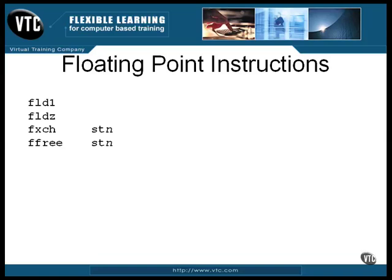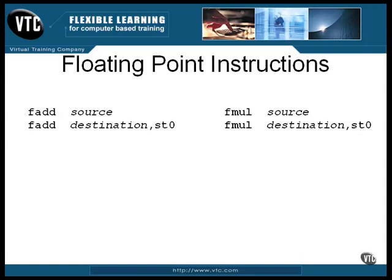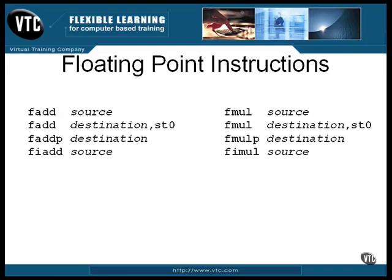The FFREE instruction marks the named register as being available by marking it as empty. The sets of instructions for addition and multiplication are analogous to one another. One form adds or multiplies a number from the source into the ST0 register; another form adds or multiplies the contents of ST0 into the destination. The source or destination can be a memory location or another register. Forms ending with P add or multiply ST0 into the destination, then pop ST0 off the stack. There is also a form that converts an integer to a floating point number and adds it to the ST0 register.